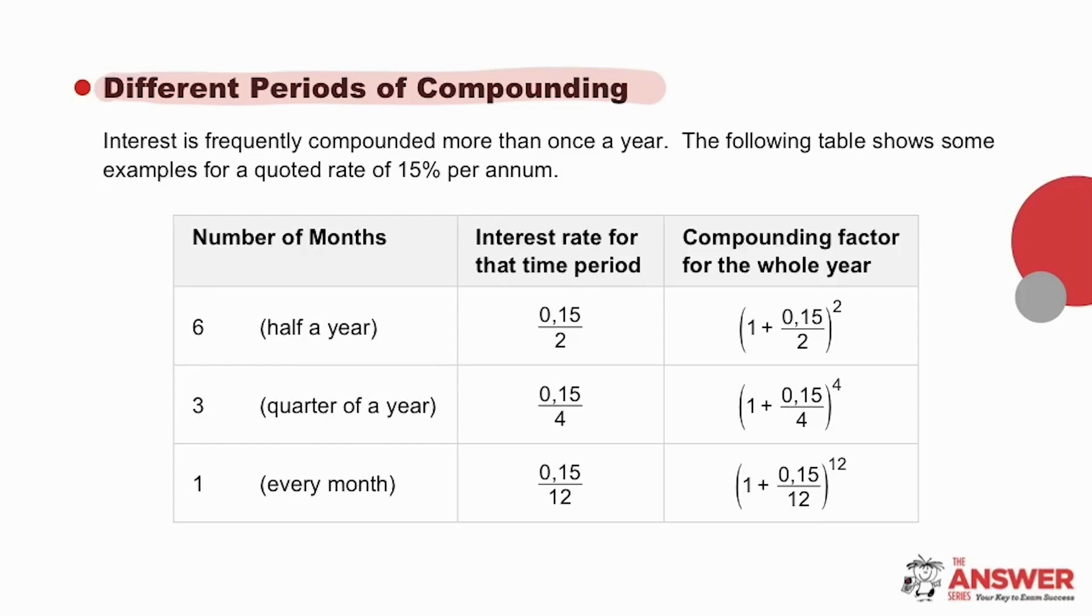Let's look at the following scenarios based on an annual interest rate of 15% per annum. We will first consider the number of times per year interest is calculated in these three different scenarios. For interest compounded every six months, interest will be calculated twice per year. For interest compounded quarterly, interest will be calculated four times per year. And for interest compounded monthly, interest will be calculated 12 times per year.